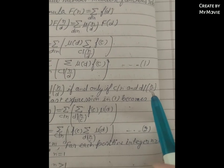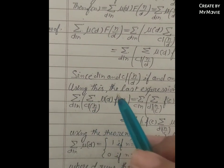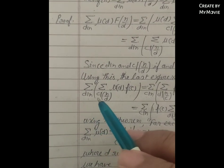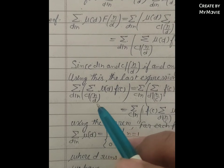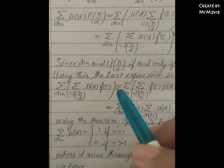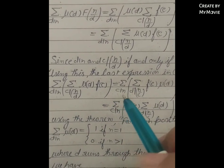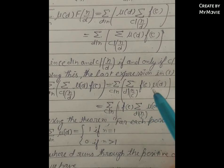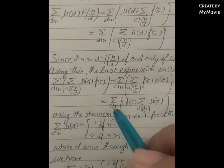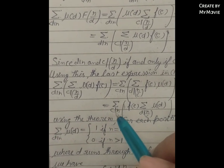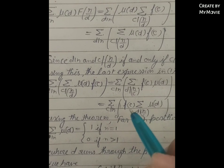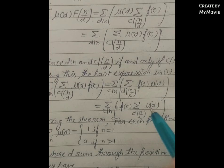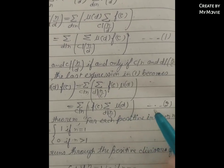Using this last expression, equation (1) becomes Σ_{d|n} [ Σ_{c|n/d} μ(d) f(c) ] = Σ_{c|n} [ Σ_{d|n/c} f(c) μ(d) ] = Σ_{c|n} [ f(c) · Σ_{d|n/c} μ(d) ]. Call this equation (2).